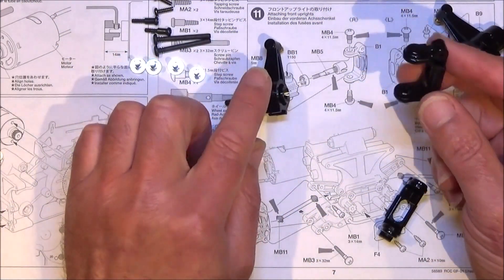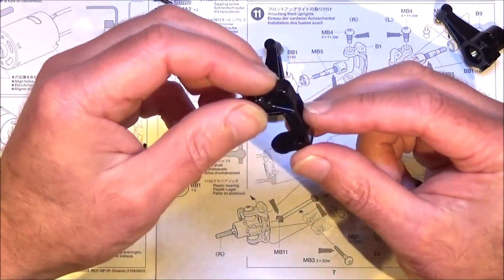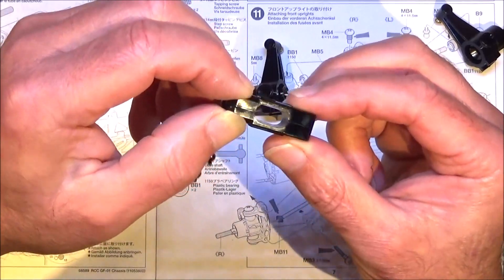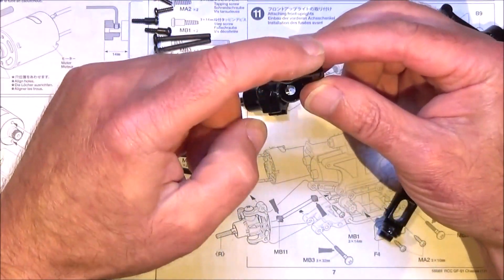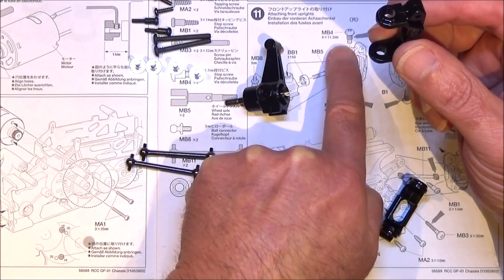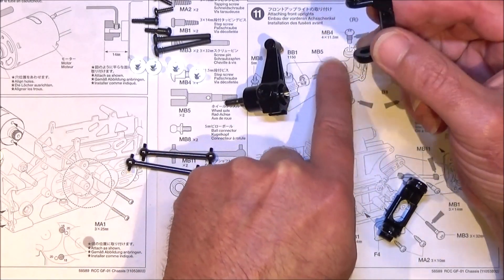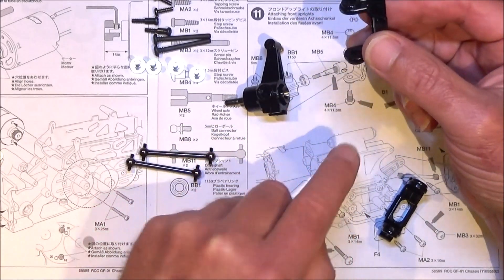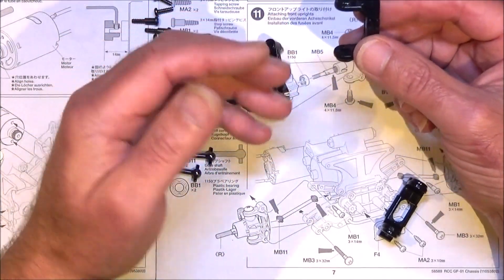Now we're going to fit those into parts B1. Again note the orientation - you want the narrower hole at the top, there's a wider one at the bottom. We're going to fit it with these MB4s which are called step screws. I'll call them king pins. Now it does show putting grease on all these parts but you'll probably notice I'm not going to bother.